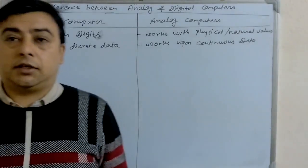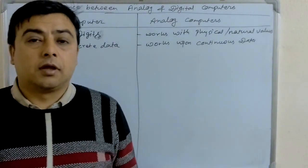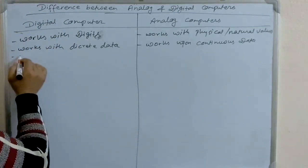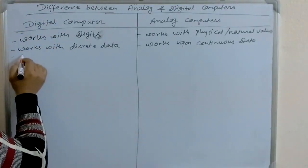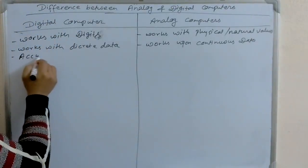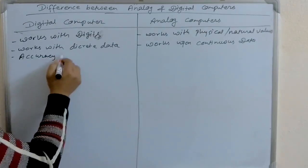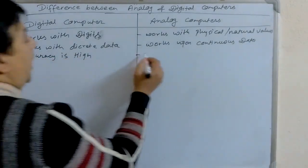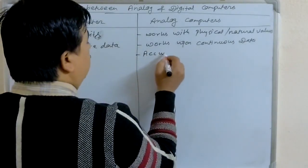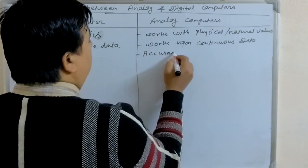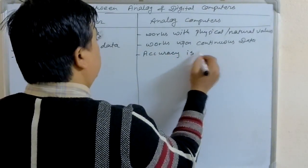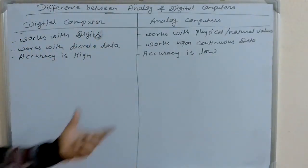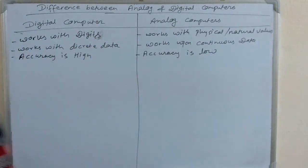The next point is, the accuracy of digital computers is high, whereas the accuracy of analog computers is low.